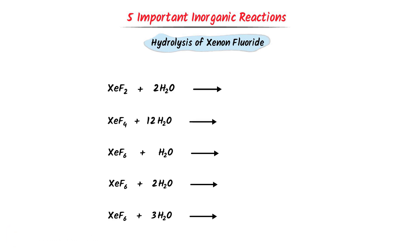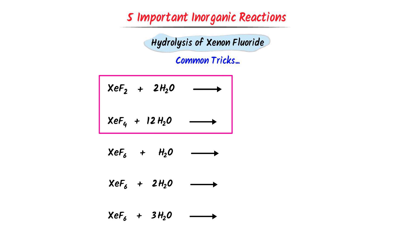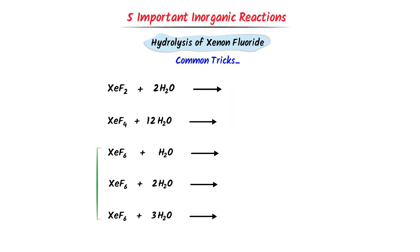Now we will learn five important reactions of hydrolysis of xenon fluorides. Remember that in all these reactions, hydrogen fluoride (HF) is formed. In the case of the third reaction, I write hydrogen fluoride. In the reactants there are two hydrogen atoms, so I write 2. For the second product: there is one xenon, one oxygen, and six fluoride — I have already written two fluoride in the products so I write four fluoride.